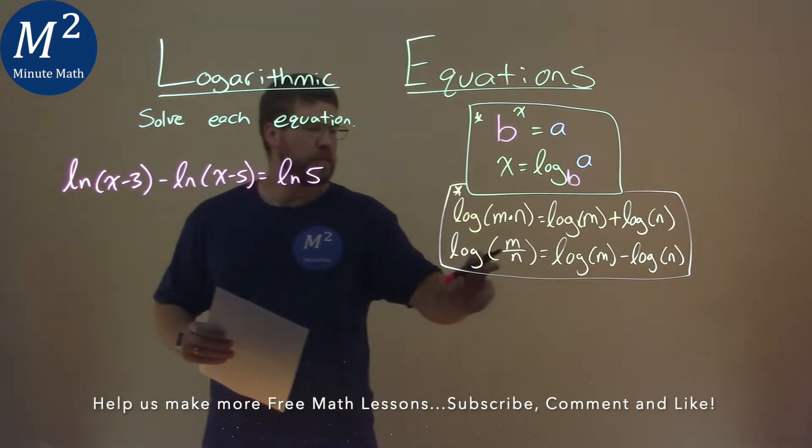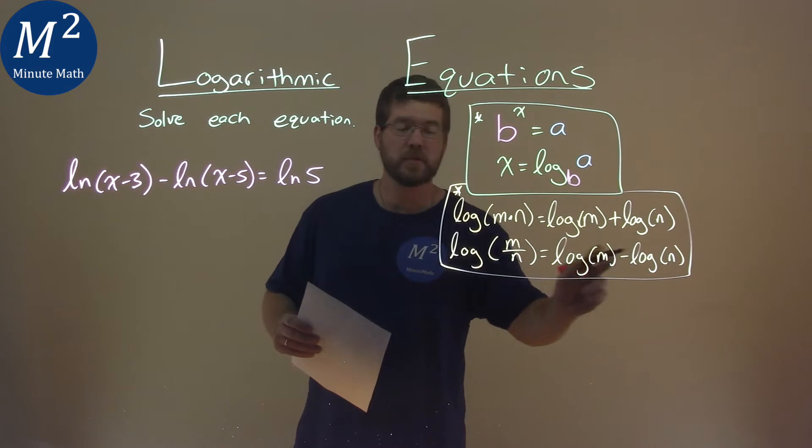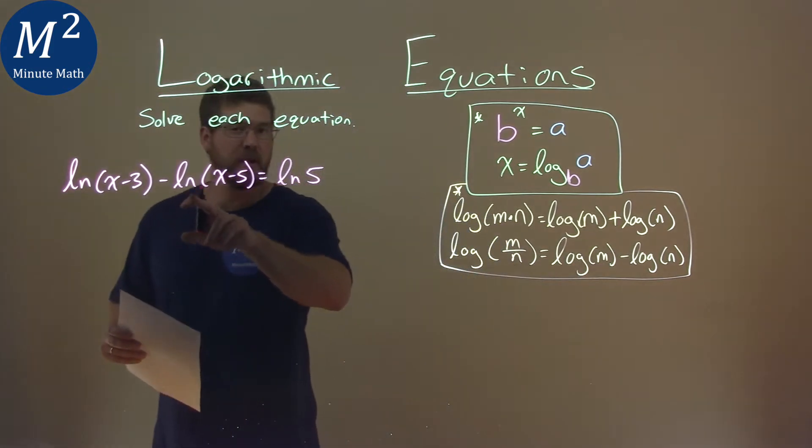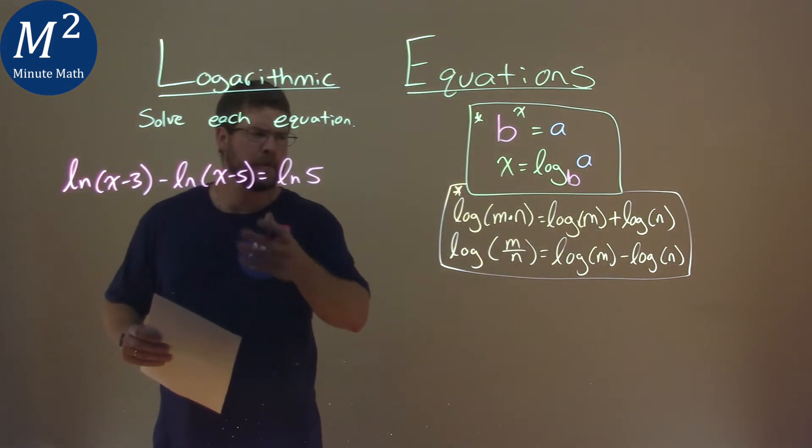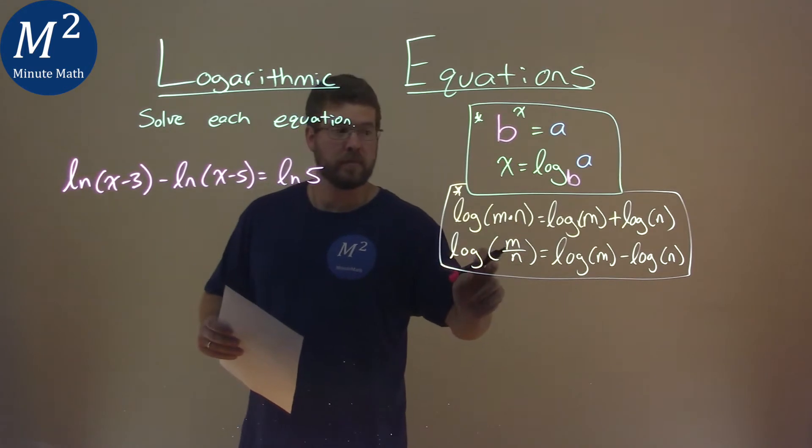Notice here, we have our second part. We're subtracting two logs with the same base. A natural log is a log base e. We can combine that to be one logarithm, and we divide the insides. So let's go do that.